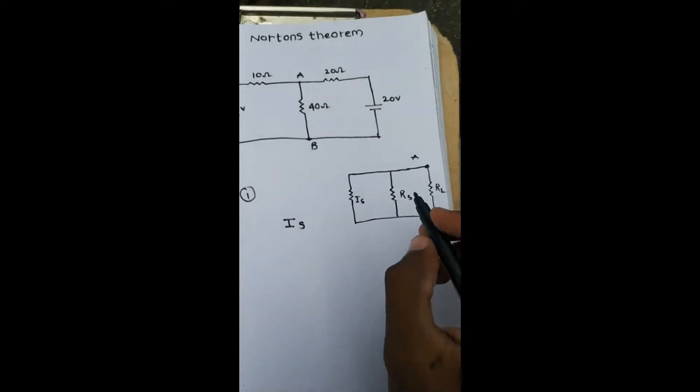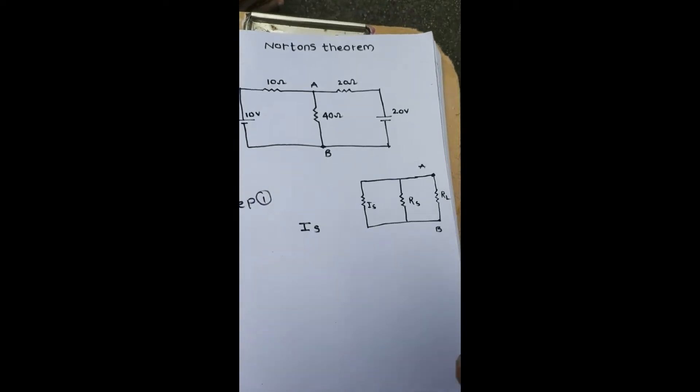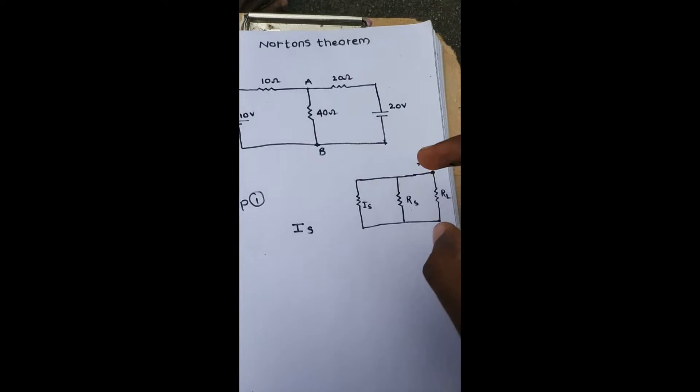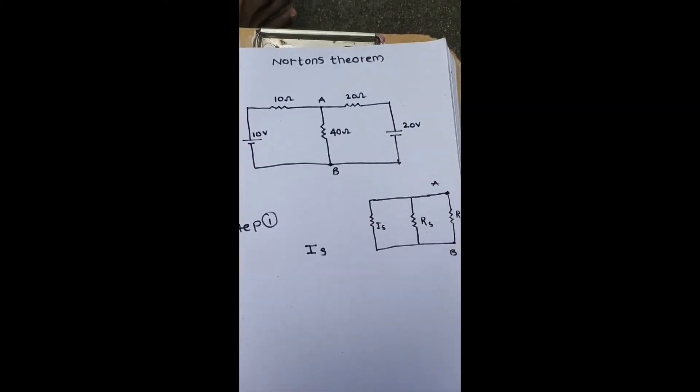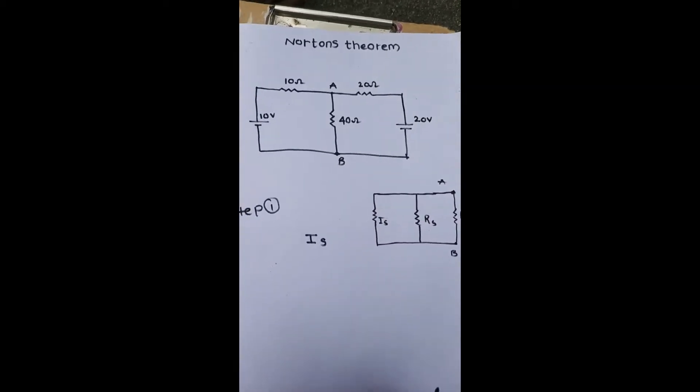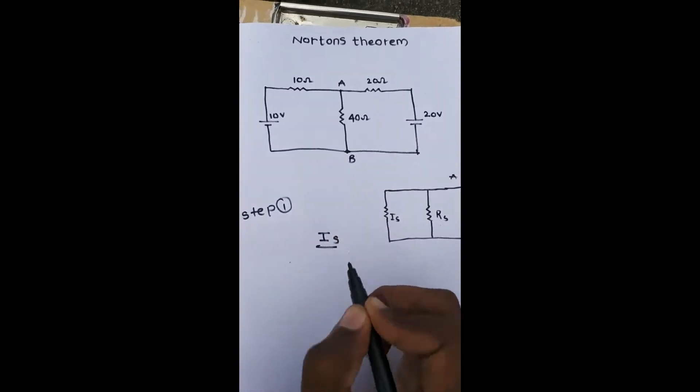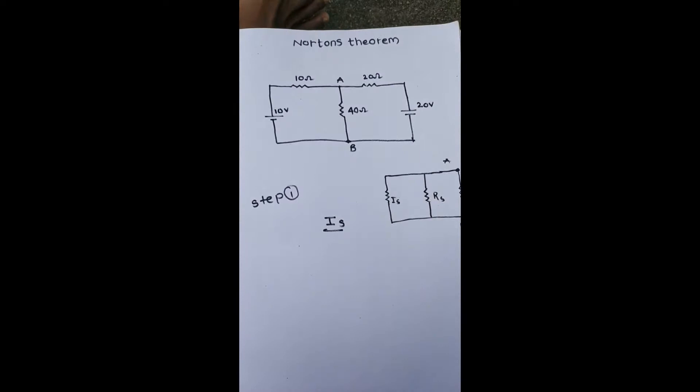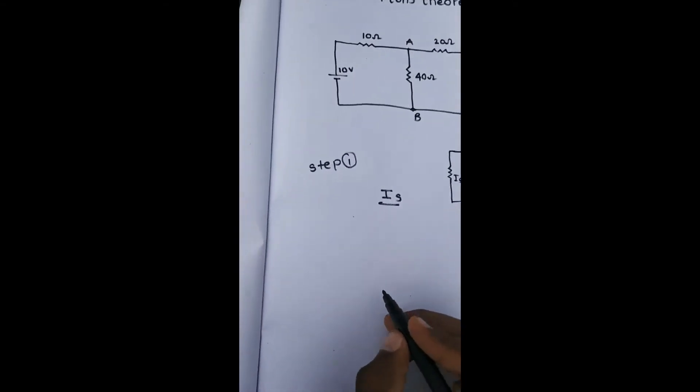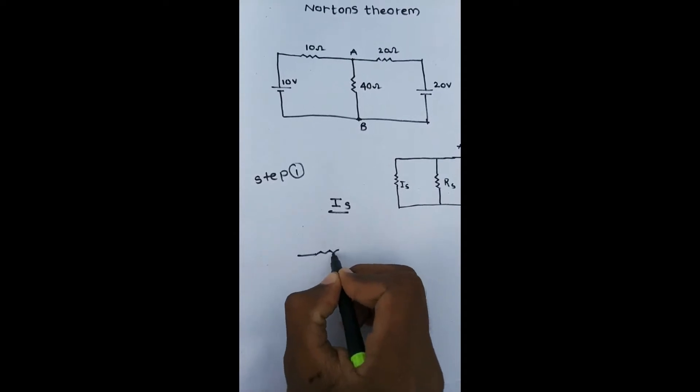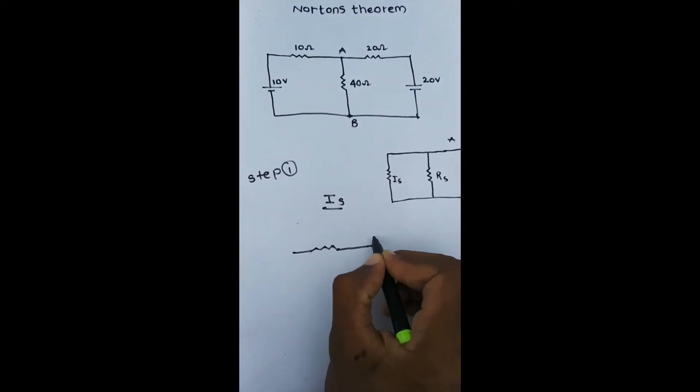Find the Is value and Rs value, then apply that to RL to find VL and the current through RL. So first we have to find Is value. First, we take 40 ohms and short circuit that. That means short circuit the RL value. This is the next circuit. It is not a load on it.